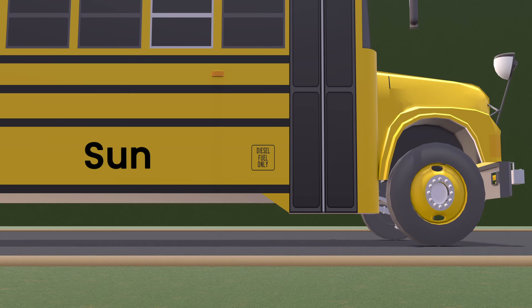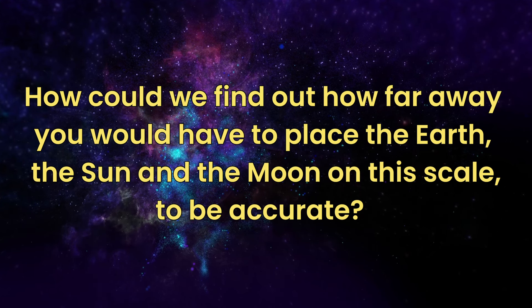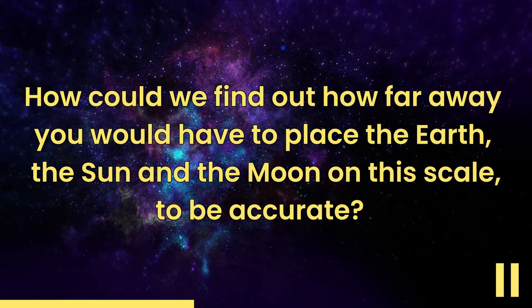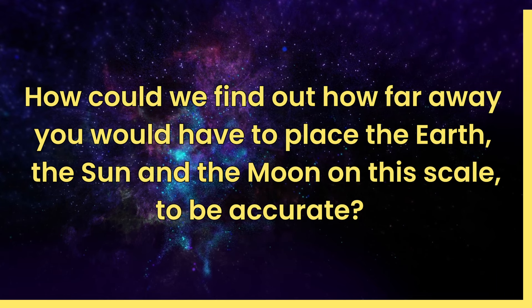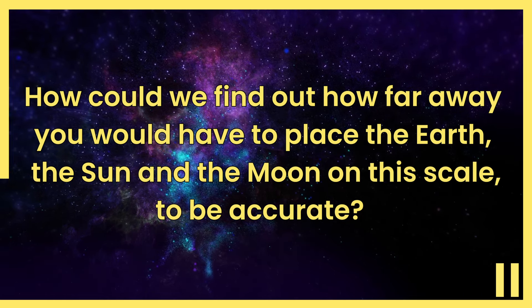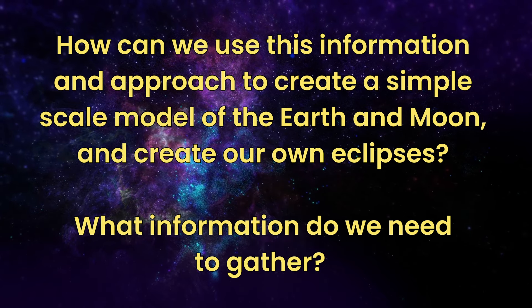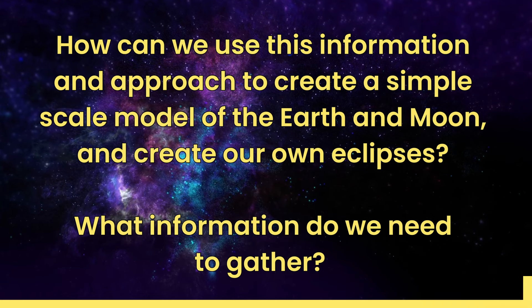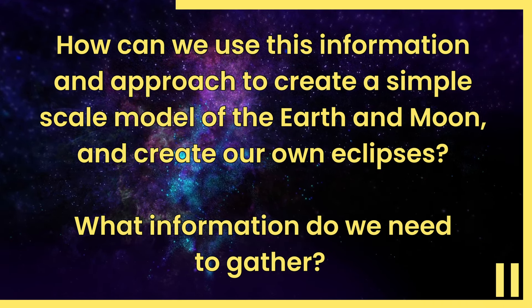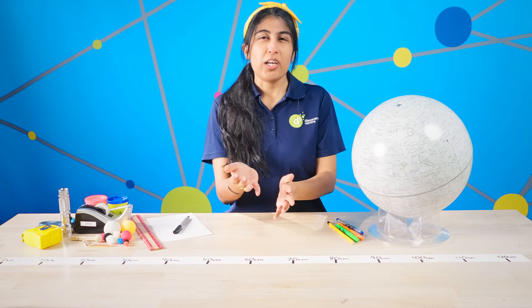To truly wrap your head around the sheer size of celestial objects, it can be helpful to use easier-to-manage scales. For example, thinking about a size scale: if the Sun were the size of a bus, how big would the Earth be? A grapefruit. What about the Moon? A grape. How could we find out how far away you would have to place the Earth, the Sun, and the Moon on this scale to be accurate? How can we use this information and approach to create a simple scale model of the Earth and Moon and create our own eclipses? What information do we need to gather, and how do I work out the scale of my model?